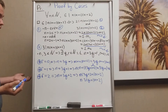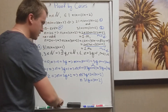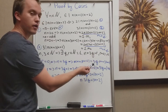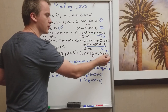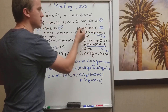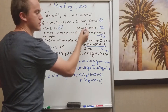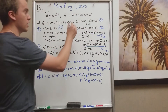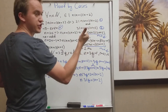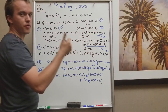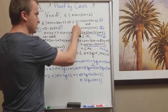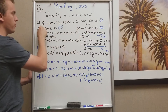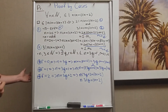We are done. Every natural number can be written as 3q plus r, and for each possible remainder this product is divisible by 3. So the whole thing is divisible by 3 for any n. The whole thing is divisible by 2 — check. The whole thing is divisible by 3 — check. Since it's divisible by both 2 and 3, the whole product is divisible by 6. And we are done.